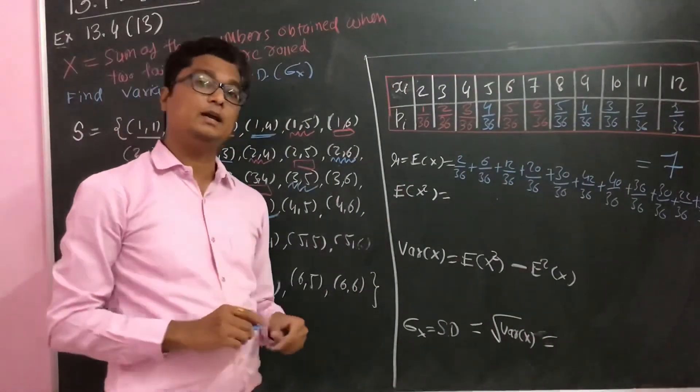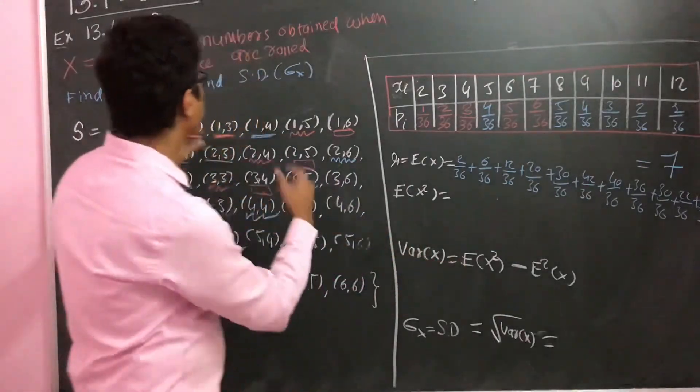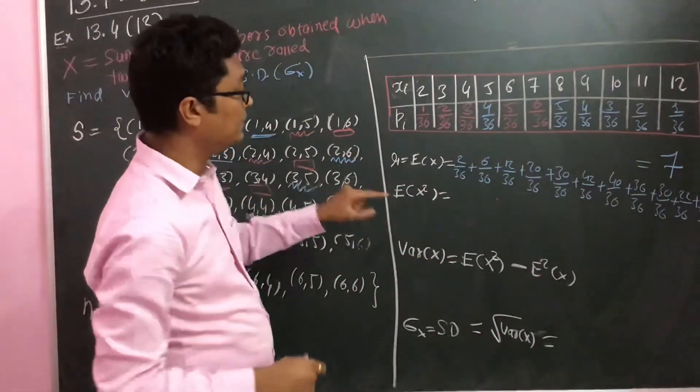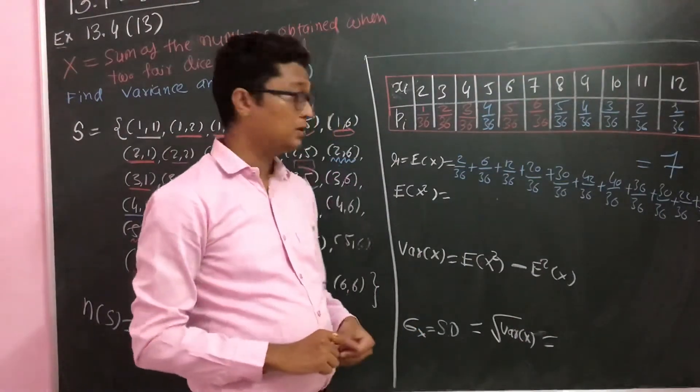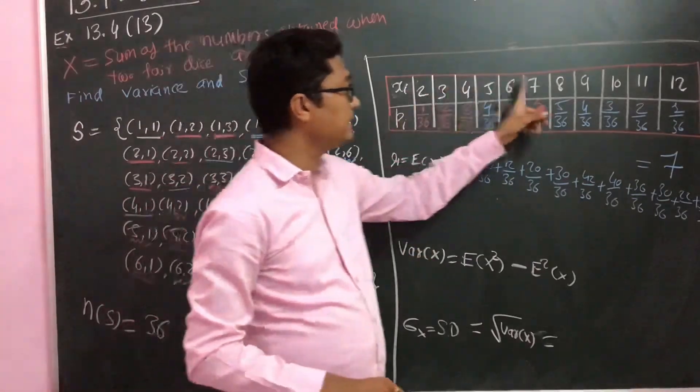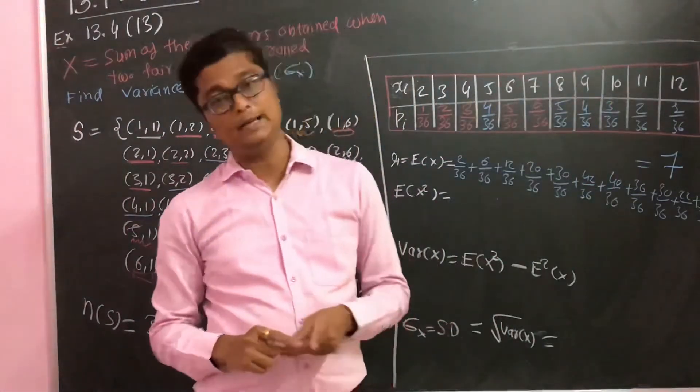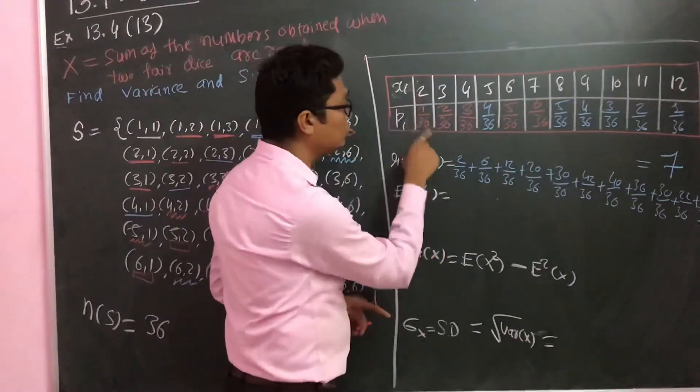Then you have to find expectation of X square. This is the first numerical in this exercise where you have to find variance or standard deviation. So what you have to do is take X square and multiply.